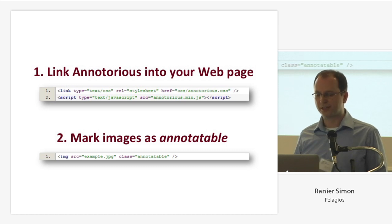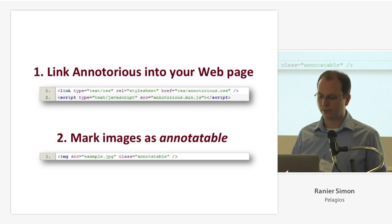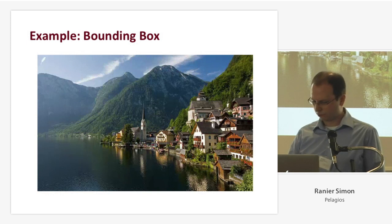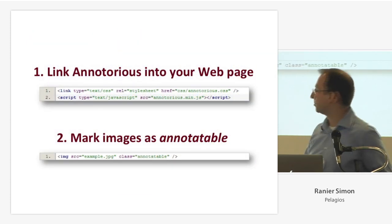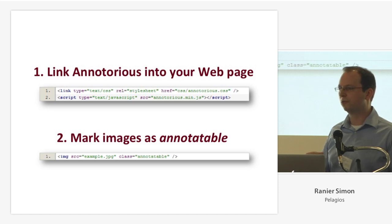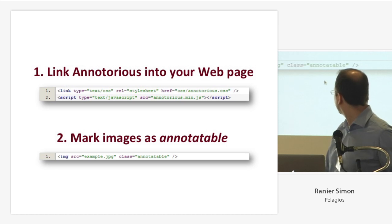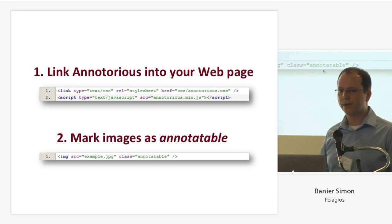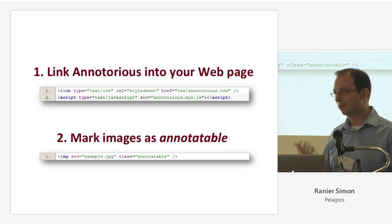It doesn't have that many features attached to it, but the focus was to make it simple to include in a web page. Basically what you need to do is just add a stylesheet, add the JavaScript file, and you don't even need to write your own JavaScript code to make images annotatable. There's a shortcut — you add a custom CSS class, and when the page loads, Ennotorious itself scans the page for images marked with this class and makes them annotatable.